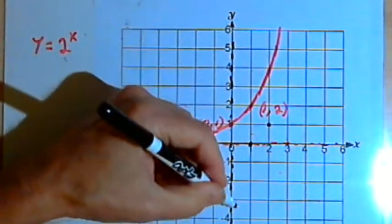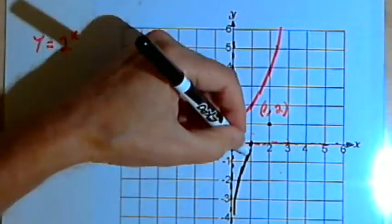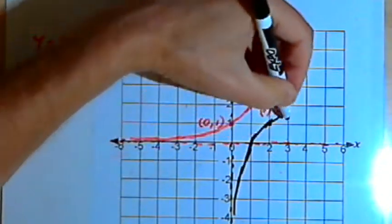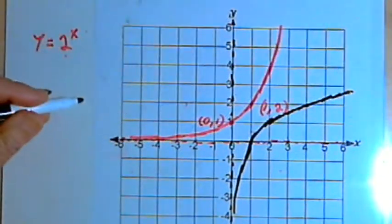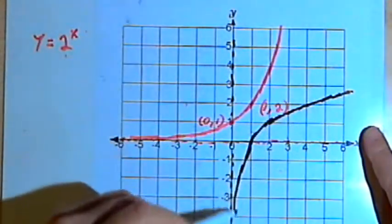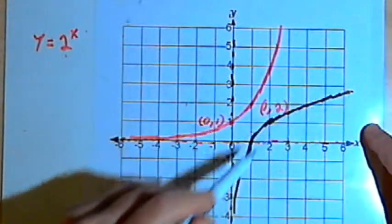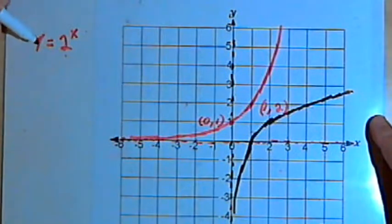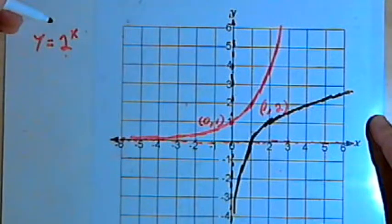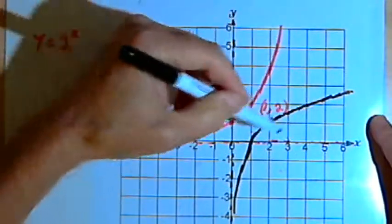It looks like it's going to be an increasing function. So let's connect the points and I'll have a curve that looks like this. Looking at that curve for the inverse, what we see looks like the graph of a logarithmic function. And this makes sense because the inverse of an exponential function is in fact a logarithmic function. So we've seen this graphically by just looking at the graph and its inverse.